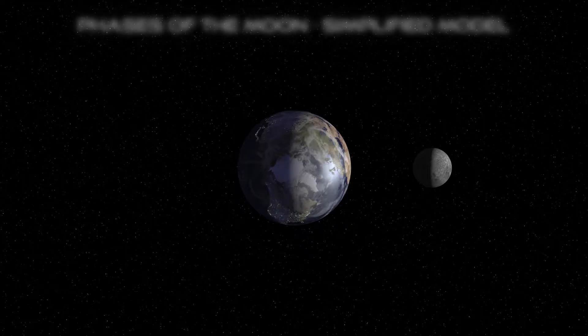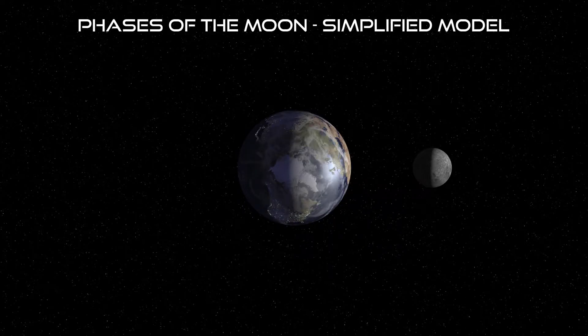Let's look at a simplified model, keeping the Earth from moving around the Sun and the Sun from moving within the galaxy. Only the Moon will move in this system.